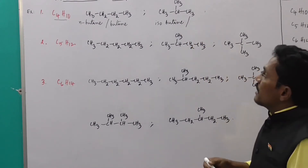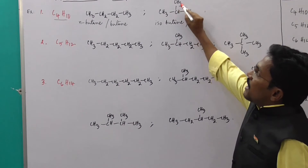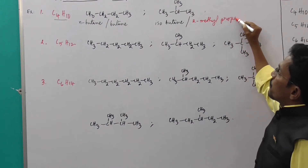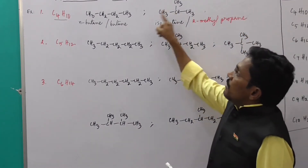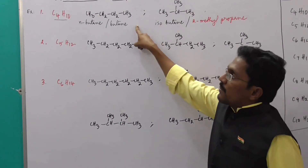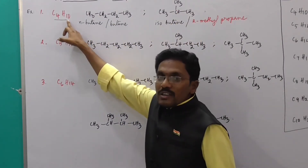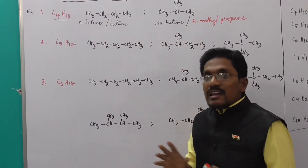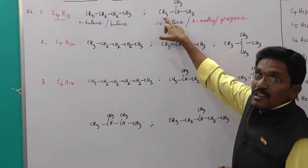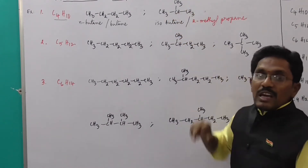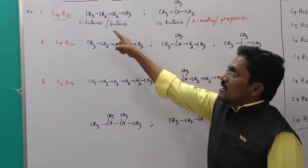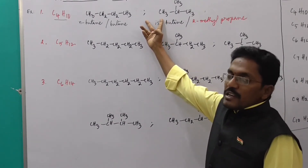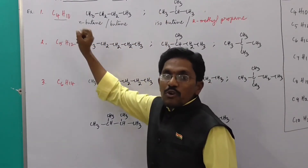The second is isobutane — at the second carbon a methyl branch is there, so it is called 2-methylpropane. Both molecules have the same number of carbons and the same number of hydrogens, that is C4H10, but the chain is different. The first molecule does not contain any branches.